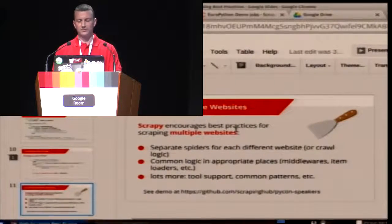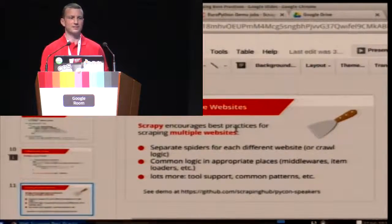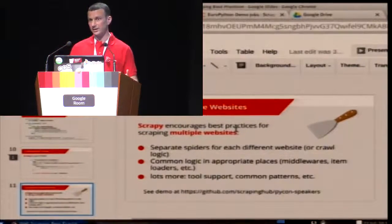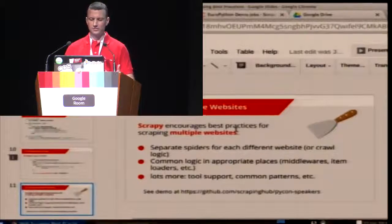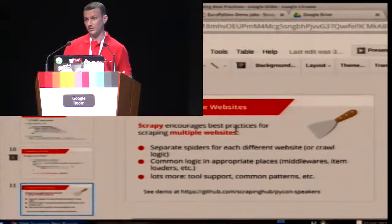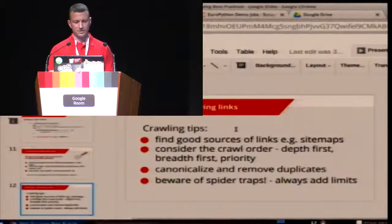A single crawl like that often turns into crawling multiple websites. At PyCon US in 2014 we did a demo — it's on Scraping Hub's GitHub account, called 'picon speakers' — where we scraped data from a whole lot of tech conferences. It's a really good example to look at because it shows how to manage a Scrapy project when you've got a lot of spiders. There's a lot of scope for code reuse across multiple websites when they're crawling the same type of thing.